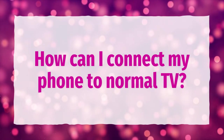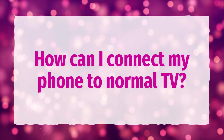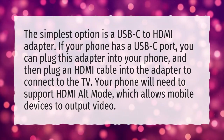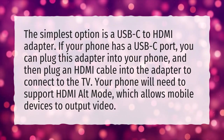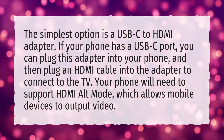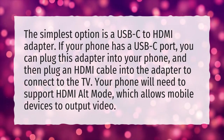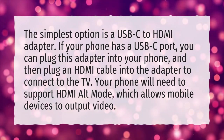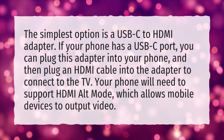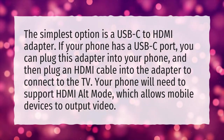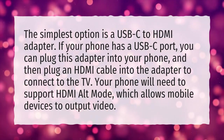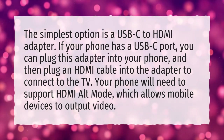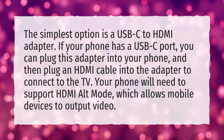How can I connect my phone to a normal TV? The simplest option is a USB-C to HDMI adapter. If your phone has a USB-C port, you can plug this adapter into your phone, and then plug an HDMI cable into the adapter to connect to the TV. Your phone will need to support HDMI alt mode, which allows mobile devices to output video.